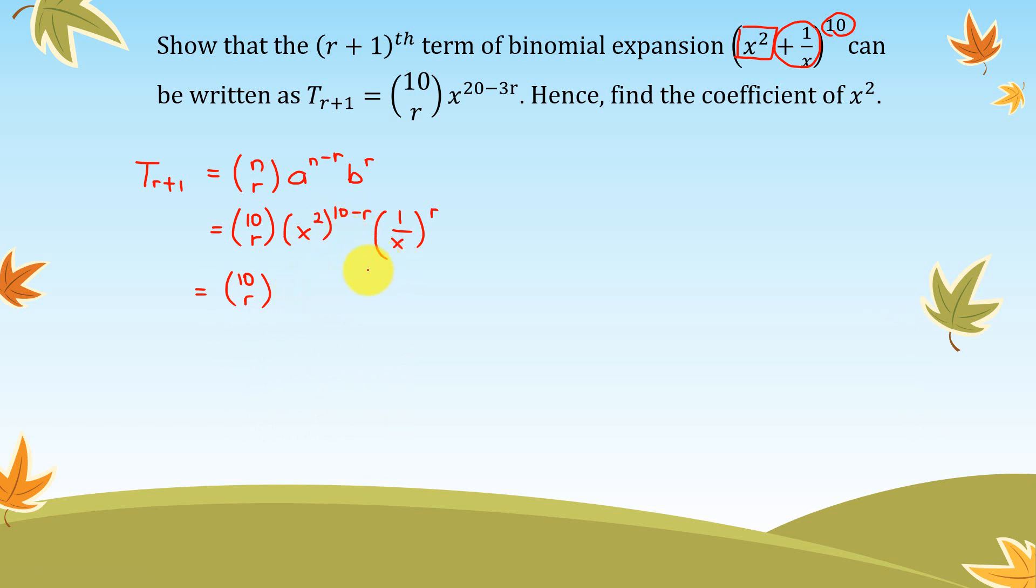Okay, so simplify it a bit. This is (10 choose r) (x²)^(10-r), so we can use the rules of indices. So this is x^(20-2r).